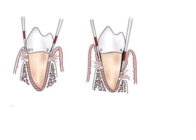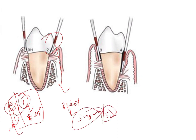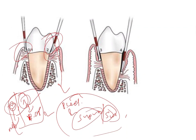Now looking at the CPITN scoring: if the probe is inserted and sulcus depth is normal with no bleeding on probing, the score is zero. Score one means bleeding on probing is present. Score two means bleeding on probing is present along with supra and/or subgingival calculus. So: zero — no bleeding on probing; one — bleeding on probing but no calculus; two — same depth but calculus and plaque are present with additional bleeding on probing.